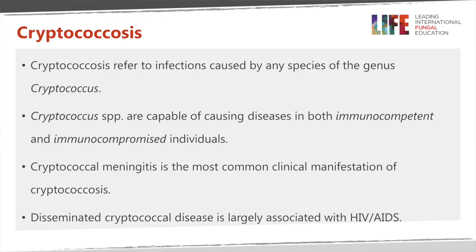To summarise what we know about Cryptococcus and the disease it causes: the term cryptococcosis refers to infections caused by any species of the genus Cryptococcus. This yeast is capable of causing disease in both immunocompetent and immunocompromised patients. Cryptococcal meningitis is the most common clinical manifestation, and disseminated disease is largely associated with HIV-AIDS patients.